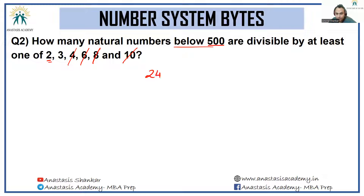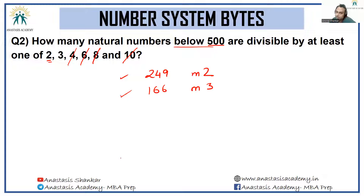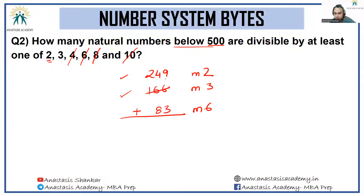Below 500, there are 249 multiples of 2. For multiples of 3: 480/3 = 160 plus 18 gives 166 multiples of 3. Multiples of 6 are counted twice, so we subtract: 480/6 gives 83 multiples of 6. Answer: 249 + 166 − 83 = 249 + 83 = 332.